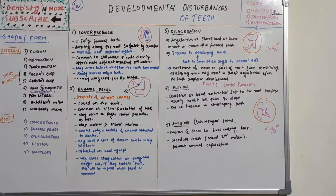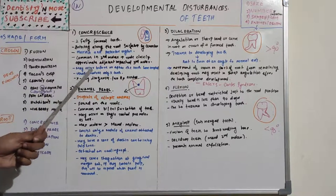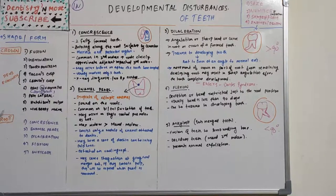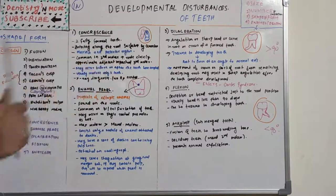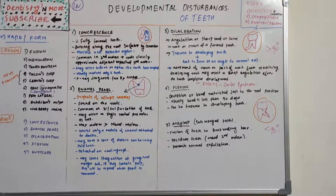The second molar and the adjacent impacted third molar are united at their roots. It may occur before or after the teeth have erupted. Usually only two teeth are involved. An X-ray is needed for diagnosis, and no special treatment is required. It is typically found incidentally when X-rays are taken for other reasons.